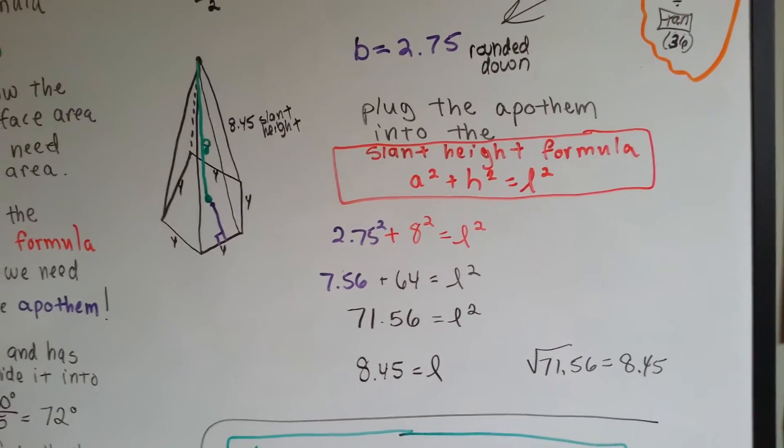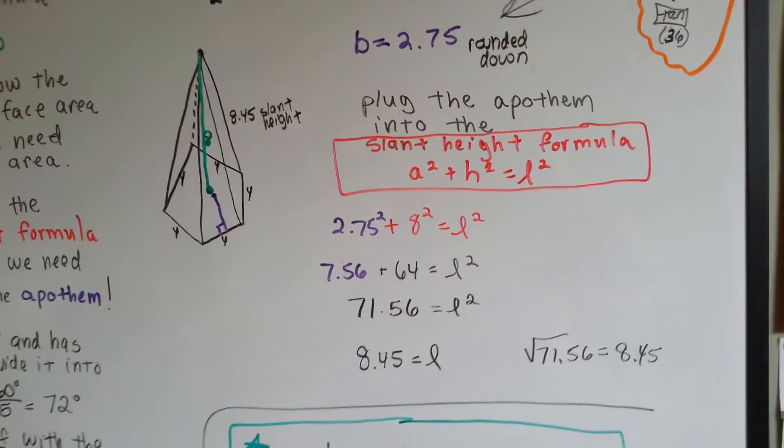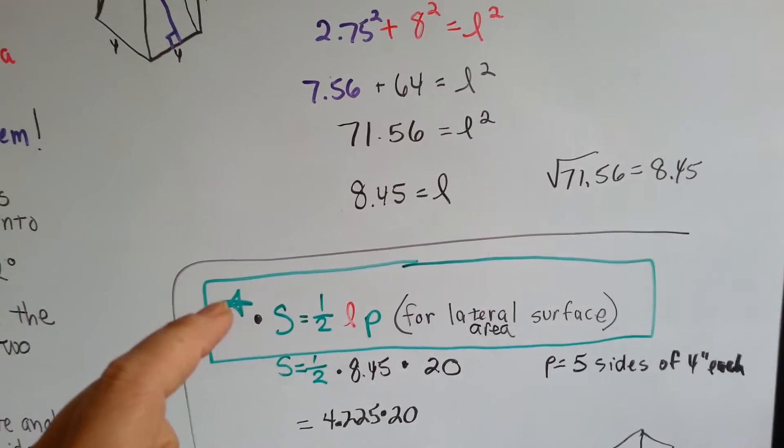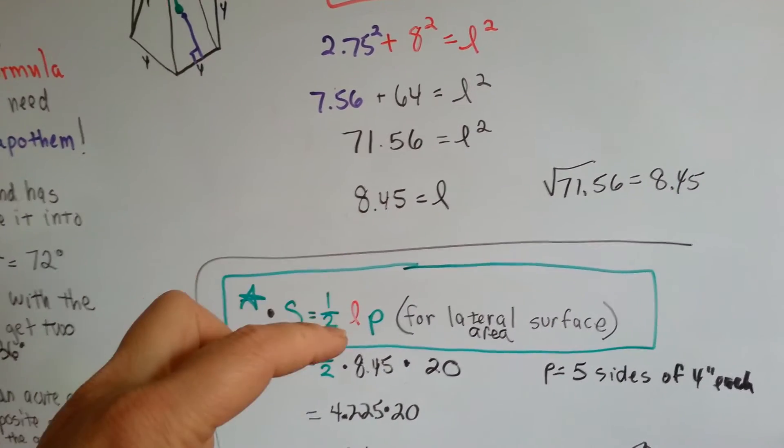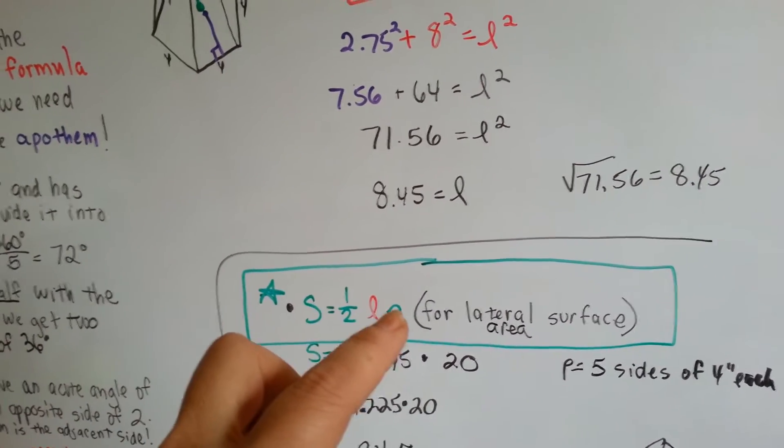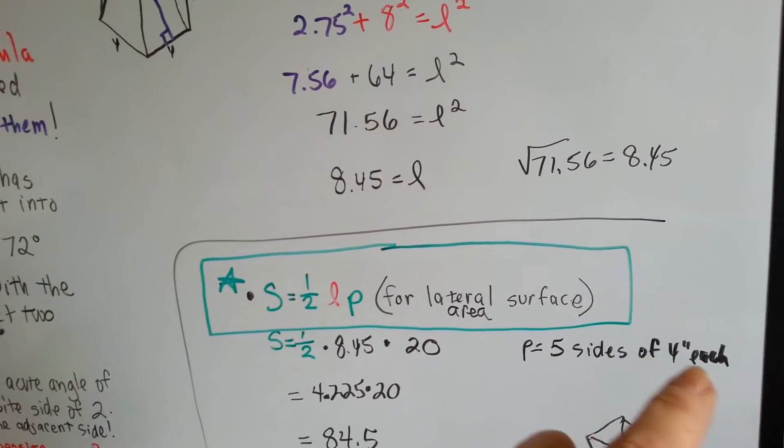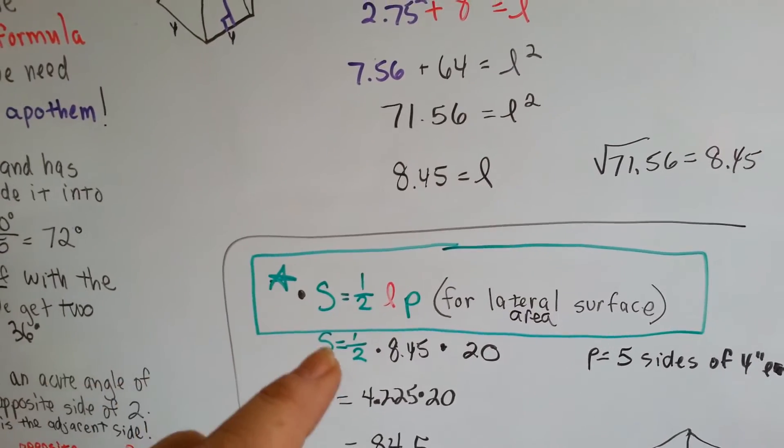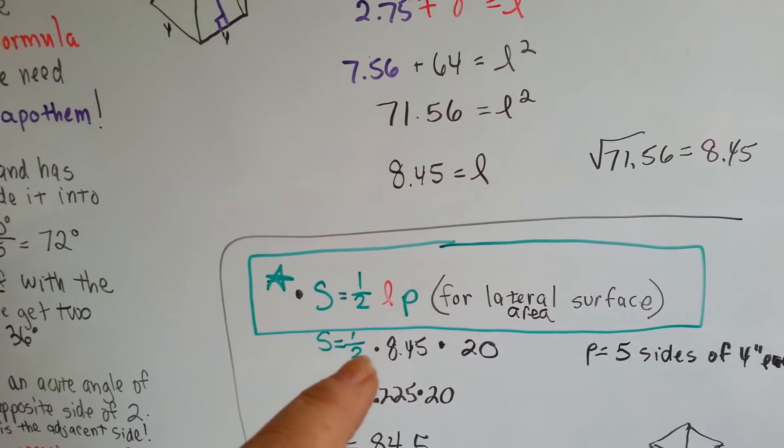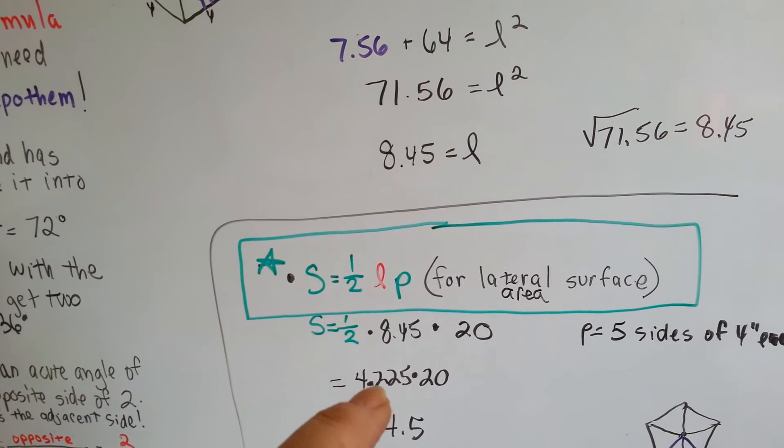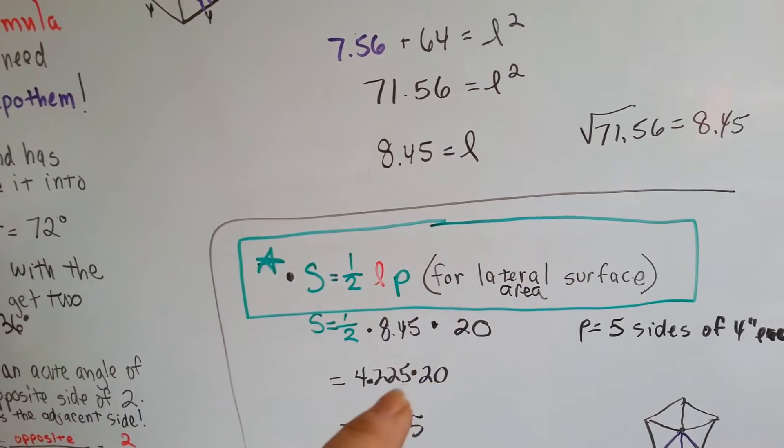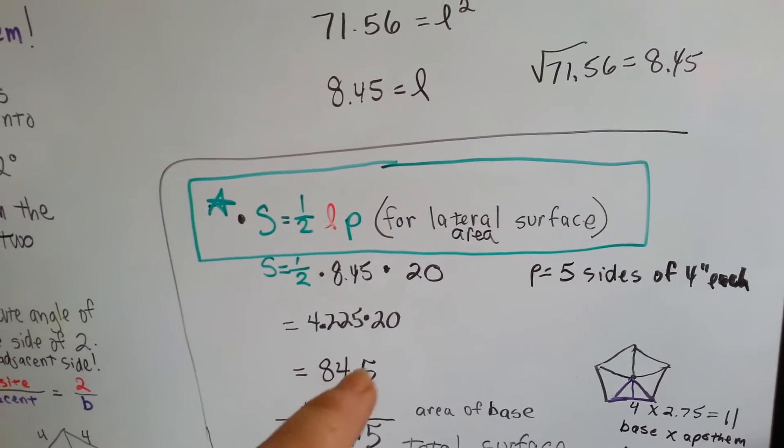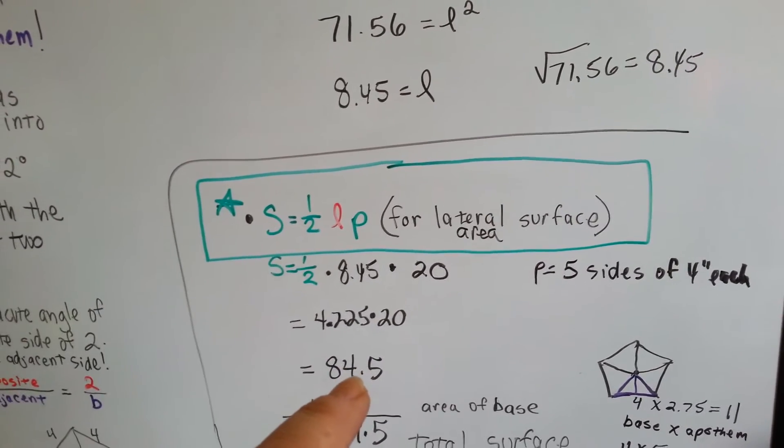Now, we have two choices. We can go my green route or we can go my orange route. So, we're going to go the green because it's right here. That's using this formula for lateral surface area. Now that we have the slant height, we can plug it into this. Now, remember, our perimeter was 20 because we had 5 sides that were 4 each. So, we're going to do half times 8.45, which is 4.225, times the 20, the perimeter. That comes out to 84.5. Now, we know that the slant heights are 84.5.